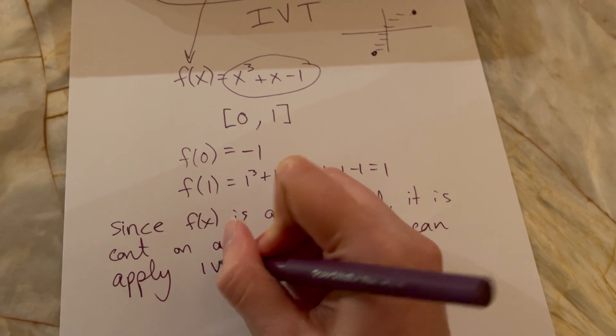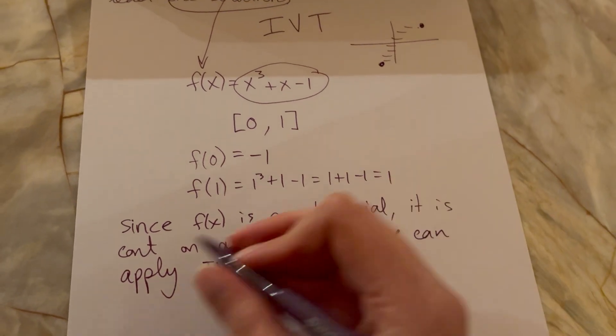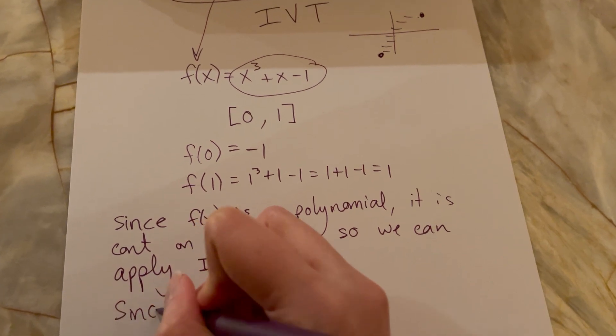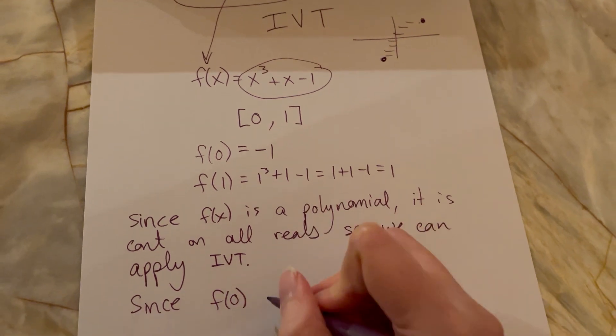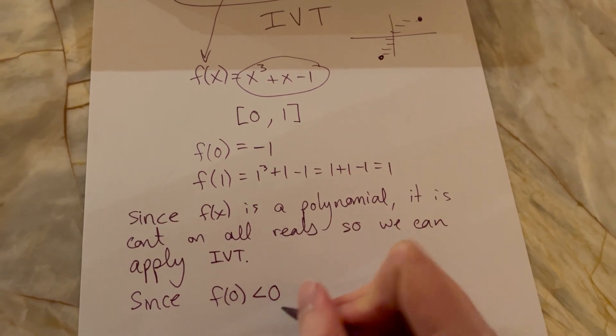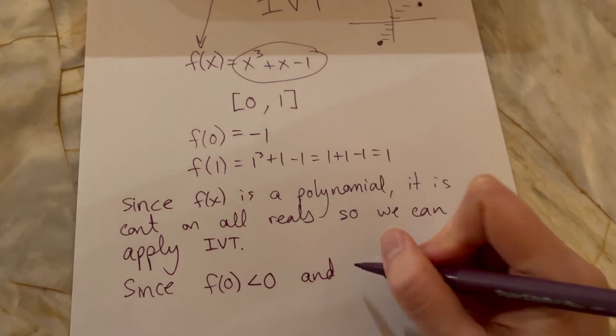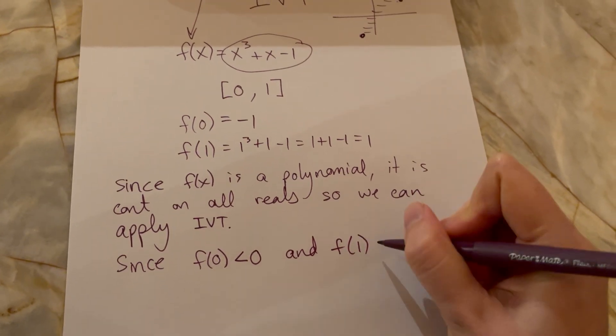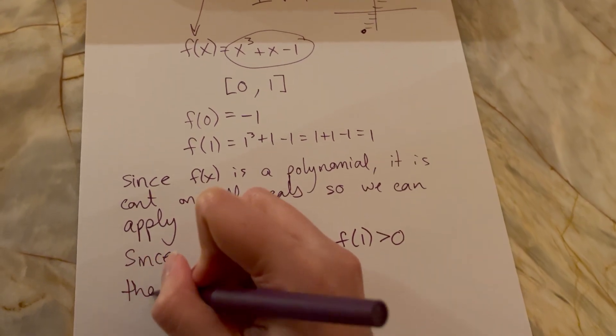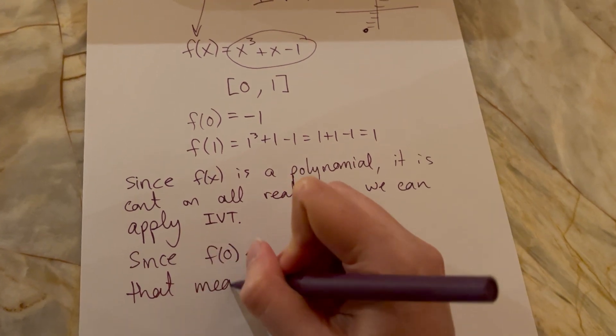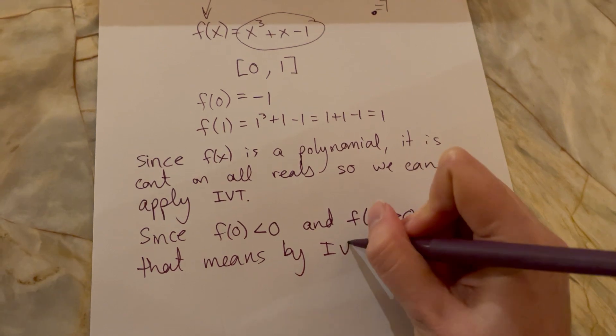And then you would say since our left endpoint f(0) was a negative height so less than zero, and then later our right endpoint height was greater than zero, it was positive one, that means by IVT...